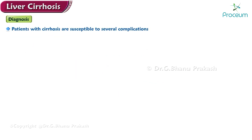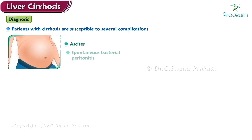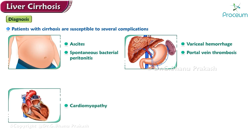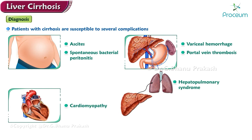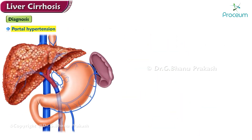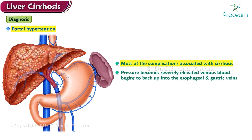Patients with cirrhosis are susceptible to several complications, including ascites, spontaneous bacterial peritonitis, variceal hemorrhage, portal vein thrombosis, cardiomyopathy, hepatopulmonary syndrome, hepatorenal syndrome, and hepatic encephalopathy. Portal hypertension is the underlying cause of most complications. As pressure becomes severely elevated, venous blood backs up into the esophageal and gastric veins, resulting in varices and even ascites.